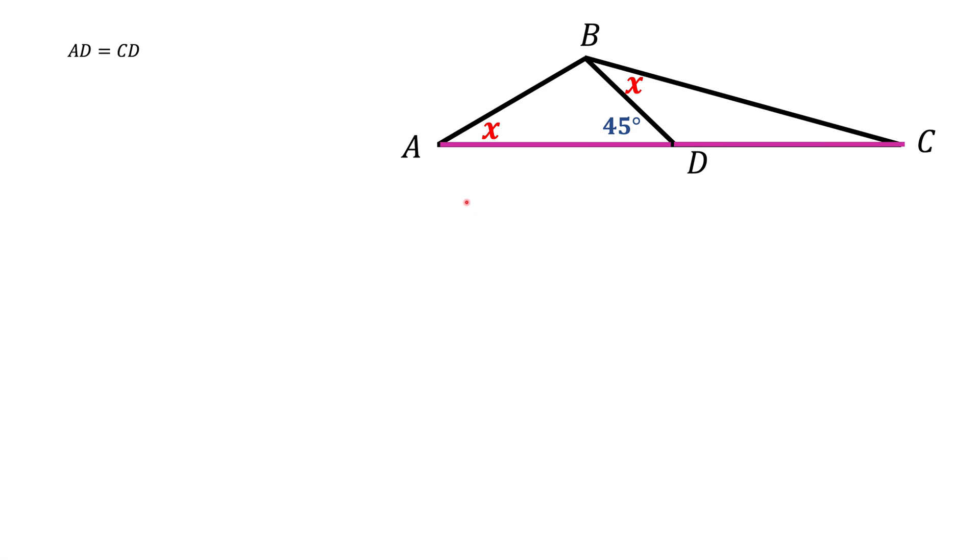Here we have a triangle ABC. We have BD which is the bisector of the side AC. Angle BDA is 45 degrees and we also know that angle A and angle DBC have the same measure X, and we're asked to find that X.